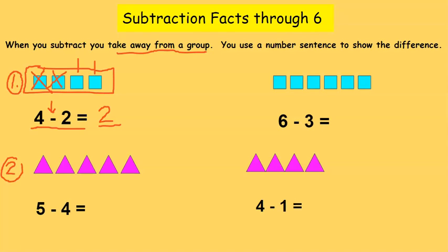Let's work on number 2. Number 2 we have purple triangles. Let's read our number sentence: 5 minus 4 equals something. We know that we have 5 in our group. We've got 5 purple triangles. We're going to take away 4 from the group. 1, 2, 3, 4.